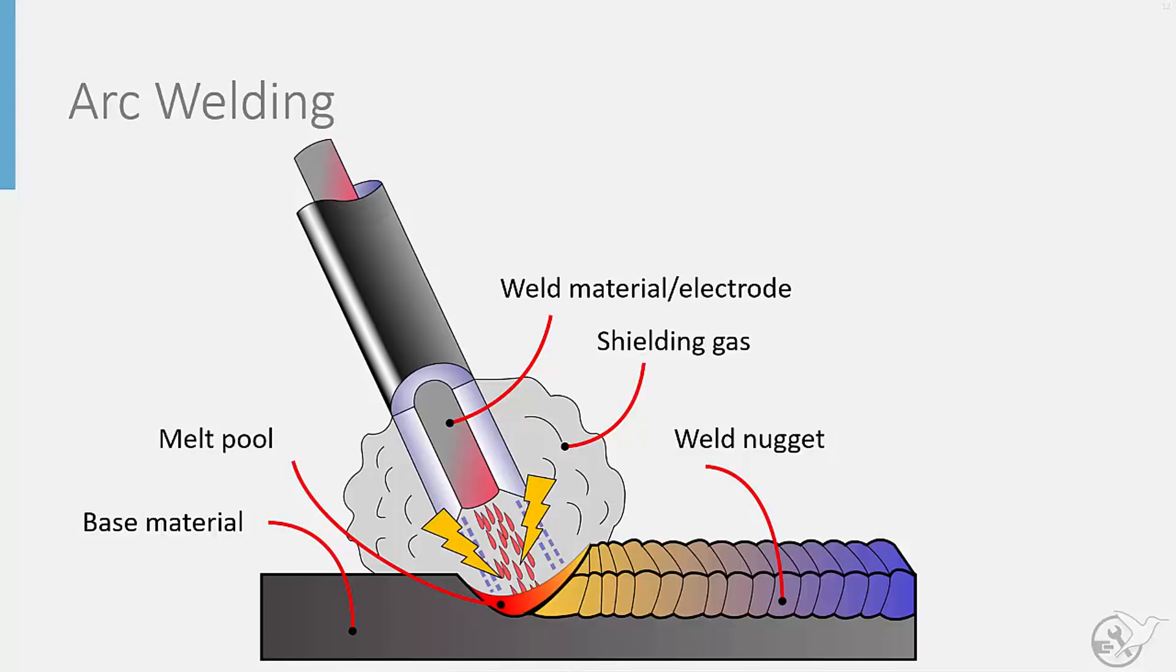As the material is deposited and cools, it forms the weld nugget as the electrode travels along the region to be welded. An inert shielding gas is blown over the electrode during the welding process to help prevent oxidation of the molten material which could reduce the quality of the weld.